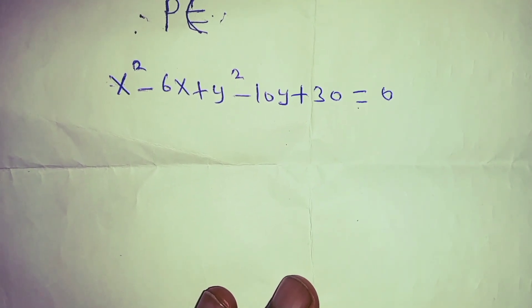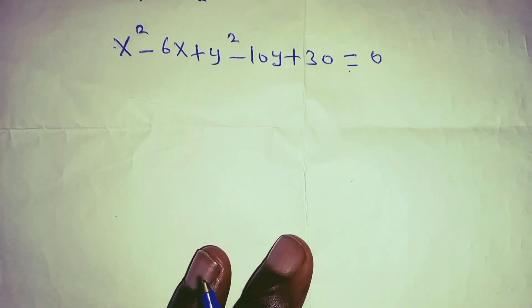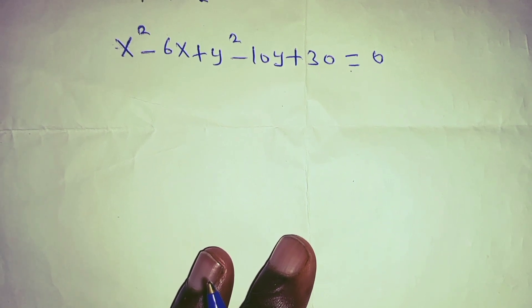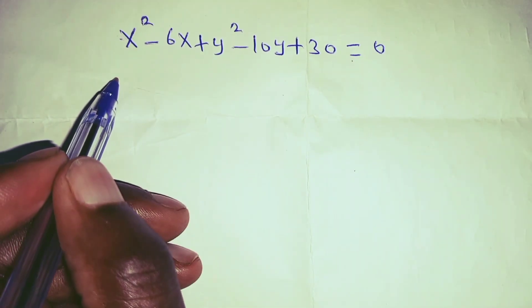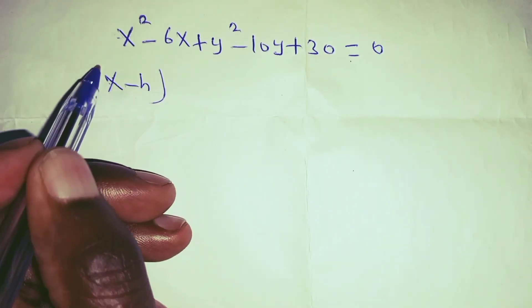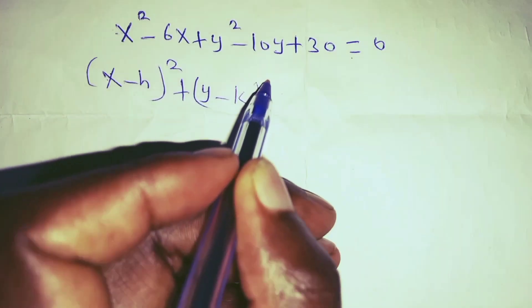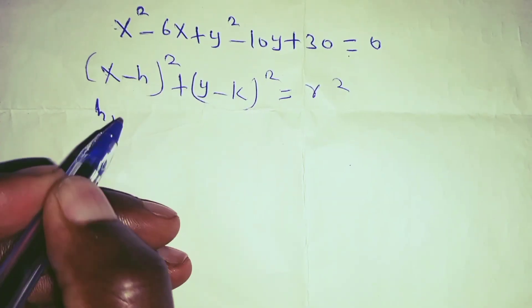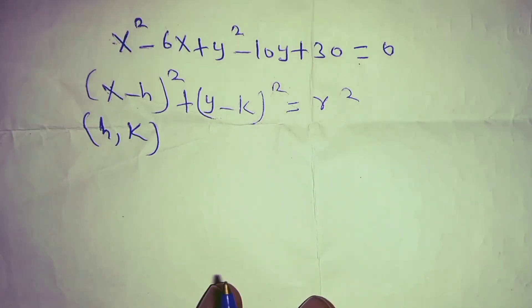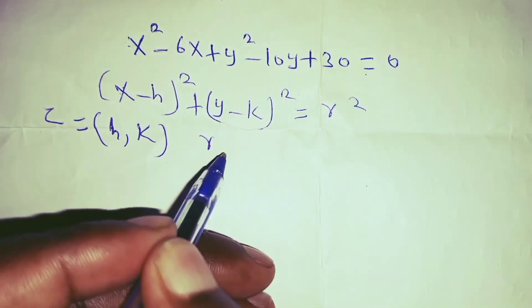Hello everyone. In this video you are going to determine the center of the circle and the radius of the circle whose equation is given. To do that, you begin by first putting down the general equation of a circle, which is given by (x minus h) squared plus (y minus k) squared equals r squared. Here, (h, k) is the center and r is the radius.